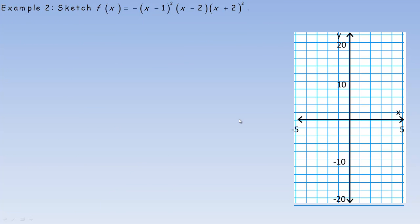One more example. Number 2 says sketch the function f(x) equals negative (x minus 1) squared times (x minus 2) times (x plus 2) cubed. Notice I put a couple of powers on a couple of these factors. One of the main things I want to show you in this example is what that does to the graph.